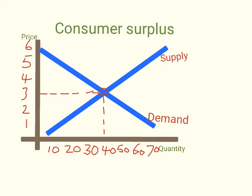If you look at this demand curve, you can see there are people who were willing to pay a lot more than three dollars for this product — actually willing to pay about five dollars or a little more. So about close to ten people were willing to pay five dollars, but the equilibrium price in the market was three dollars. They are having a surplus compared to what they value the product at — a surplus of a little more than two dollars, say five-fifty minus the actual three dollars they're paying.